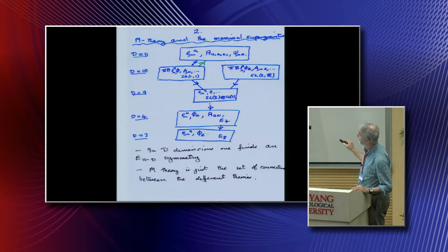You can do the same to get to 9 dimensions and you get this theory here, but there's another supergravity called 2B in 10 dimensions. If you do the dimensional reduction here you find you get the same theory because this theory is unique in 9.